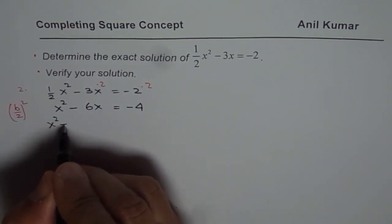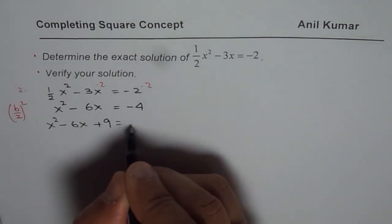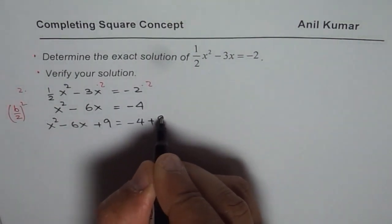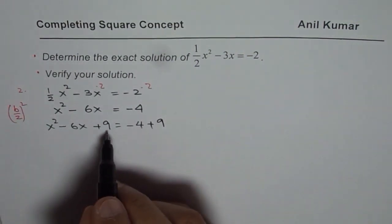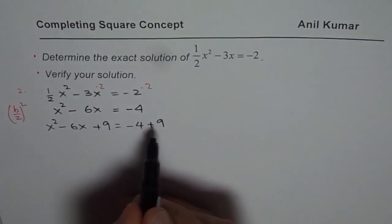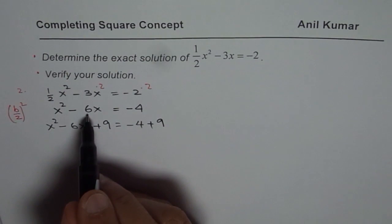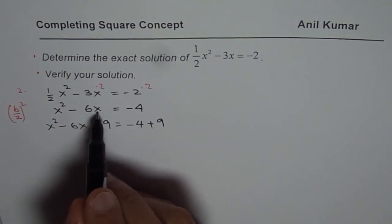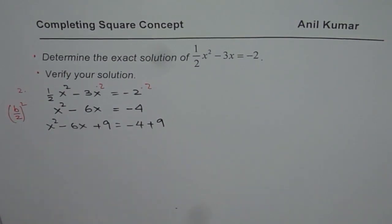So we get x square minus 6x plus 9 equals to minus 4 plus 9. So we added 9 on both sides since it is square of half of coefficient of x. That's the rule, right? That is how you complete squares.